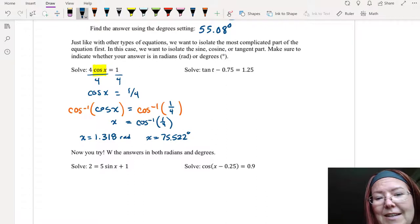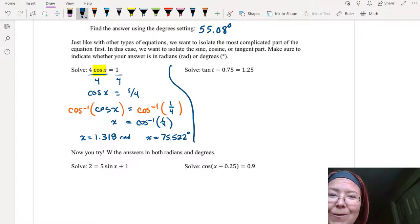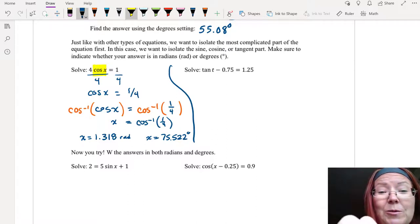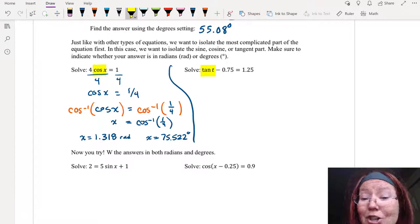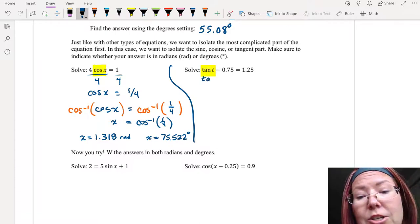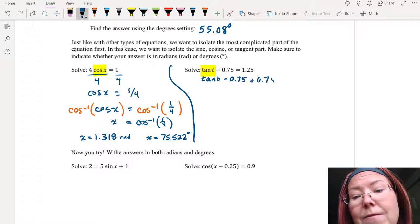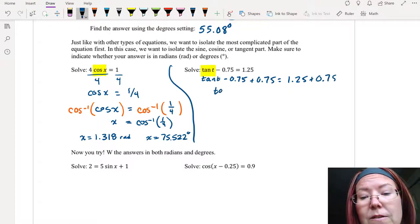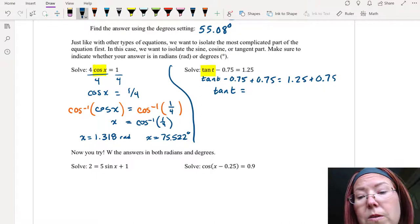Calculating that in radians we'll have x equals 1.318 radians or moving to degrees x equals 75.522 degrees. For this next one we're solving tangent t minus 0.75 equals 1.25. Again we're going to start by isolating the trig function by adding 0.75 to both sides.